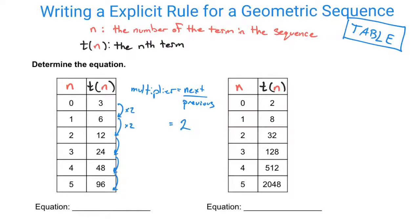Once you take a look at your table, you also want to look at what your term 0 is. So our term 0 is 3. So in this scenario, our equation is going to be t of n is equal to 3 times 2, because that's your multiplier, to the nth power. The nth power is up here because we are repeatedly multiplying by 2 every single time.